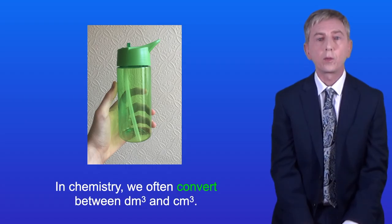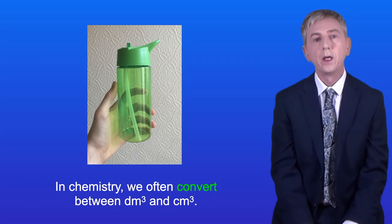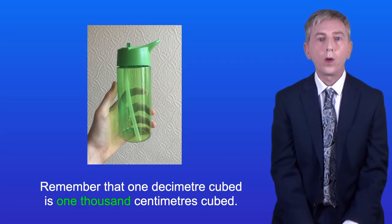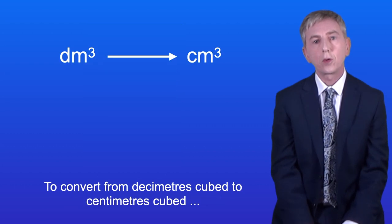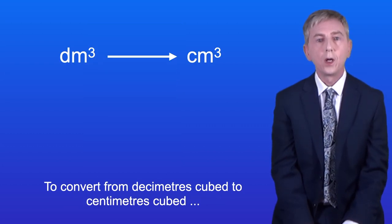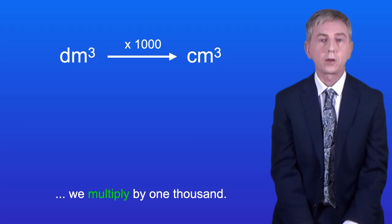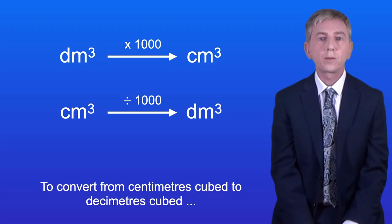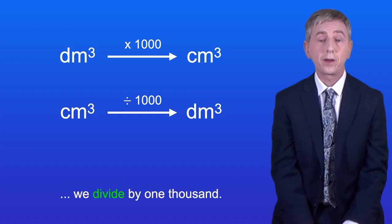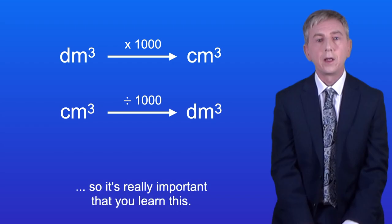In chemistry we often convert between decimetres cubed and centimetres cubed. Remember that one decimetre cubed is one thousand centimetres cubed. To convert from decimetres cubed to centimetres cubed, we multiply by one thousand. To convert from centimetres cubed to decimetres cubed, we divide by one thousand. Many students find this confusing, so it's really important that you learn this.